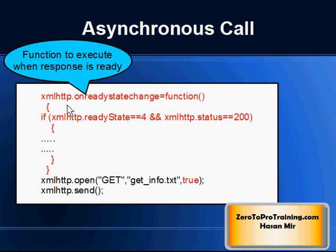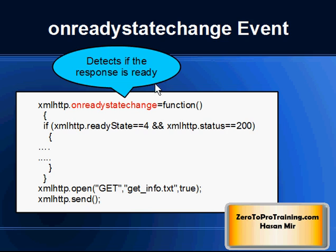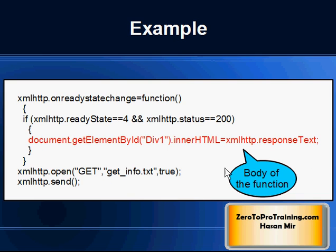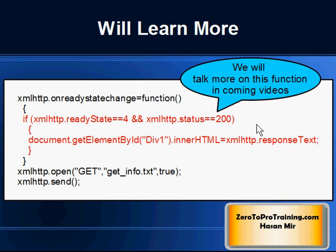On the screen you can see this function highlighted in red. The onReadyStateChange function is called when the response from the server is detected — this is how Ajax works. You can also see the area where the core body of the function goes; in our example, there is one line in the core body right now. You will learn more about the onReadyStateChange function in coming videos.